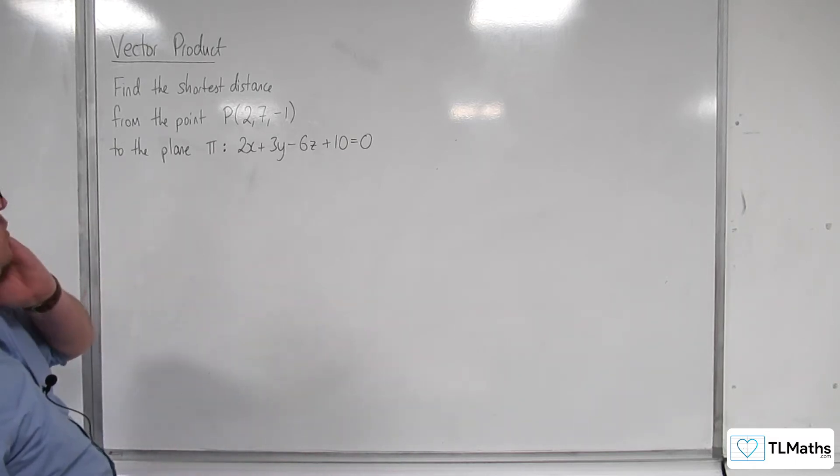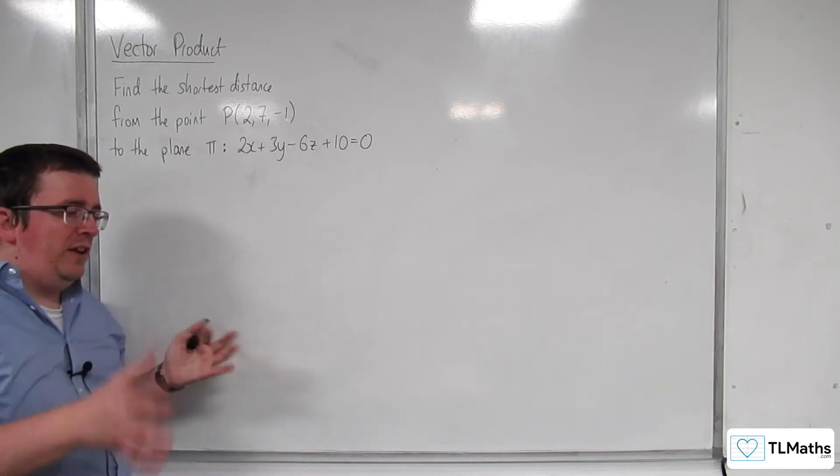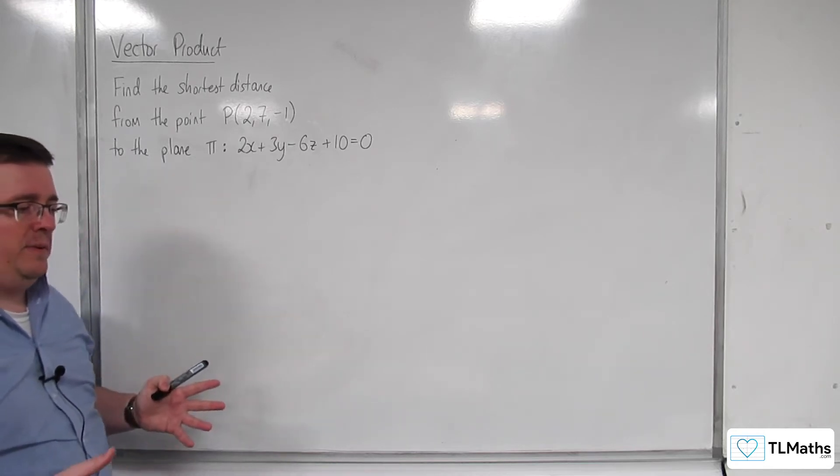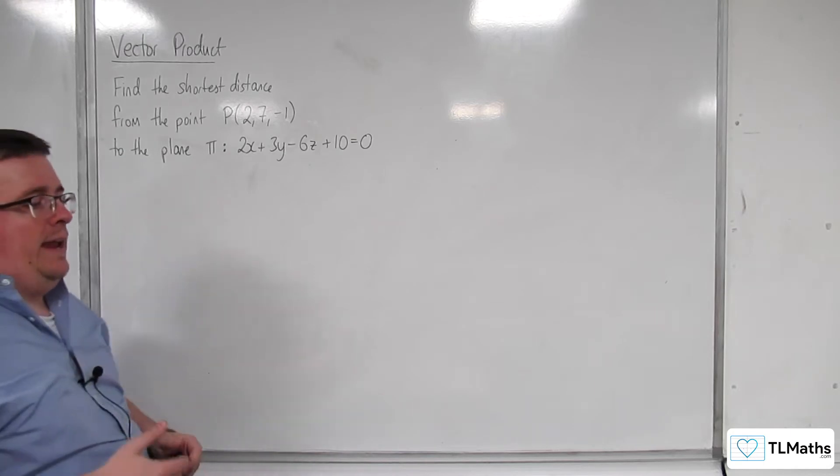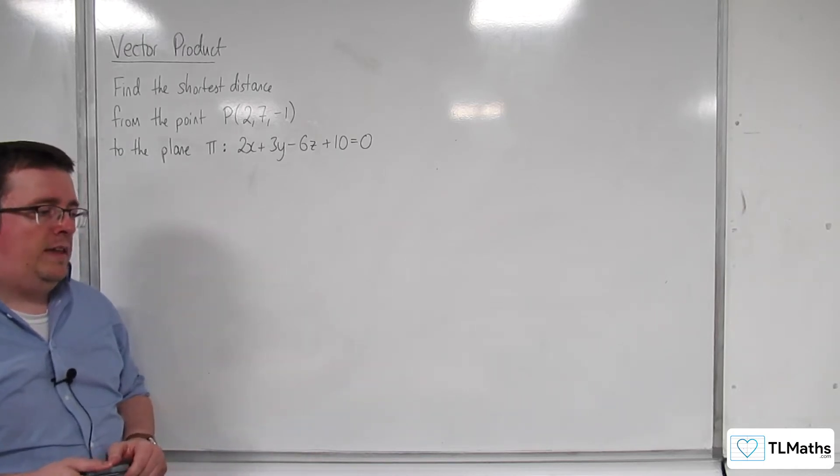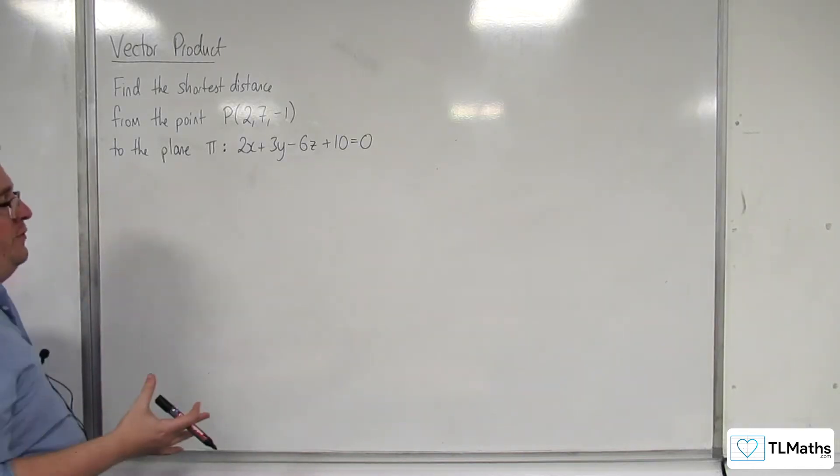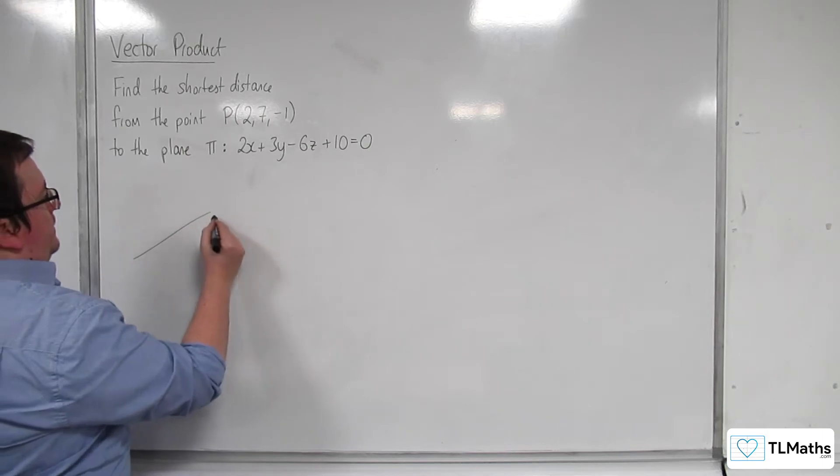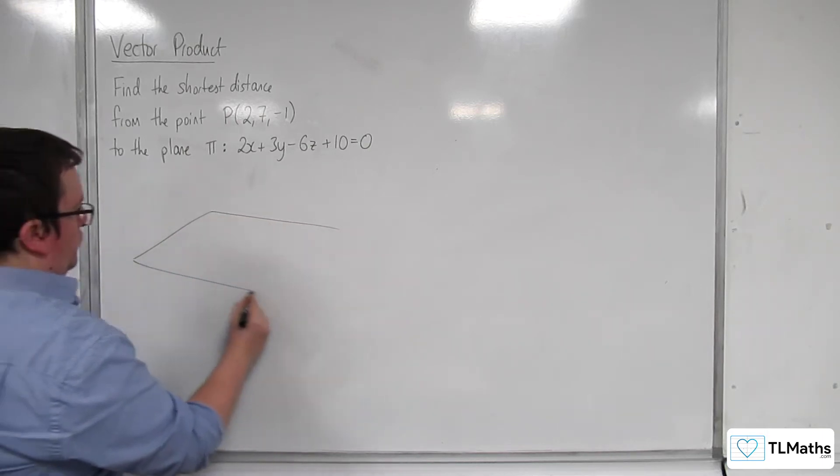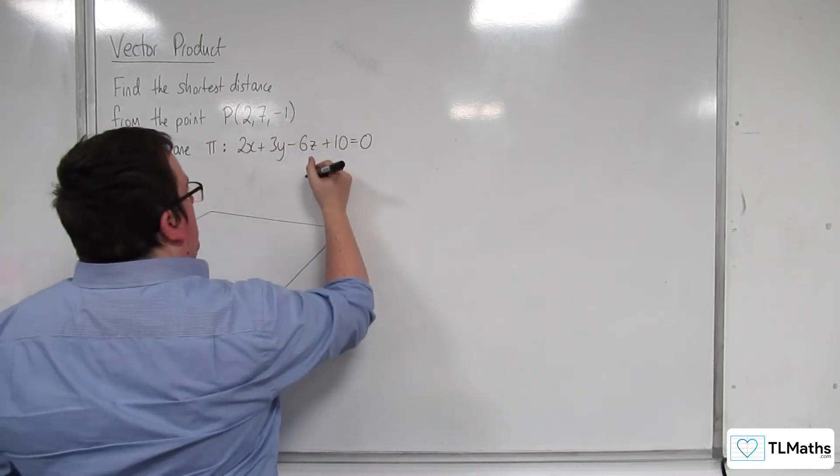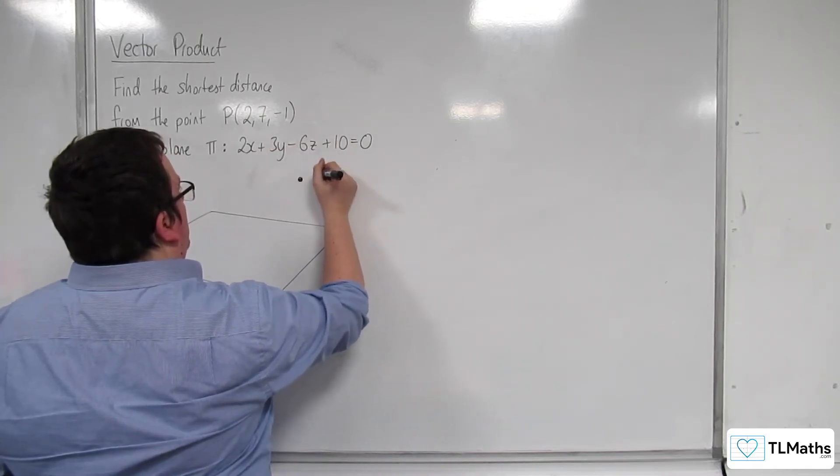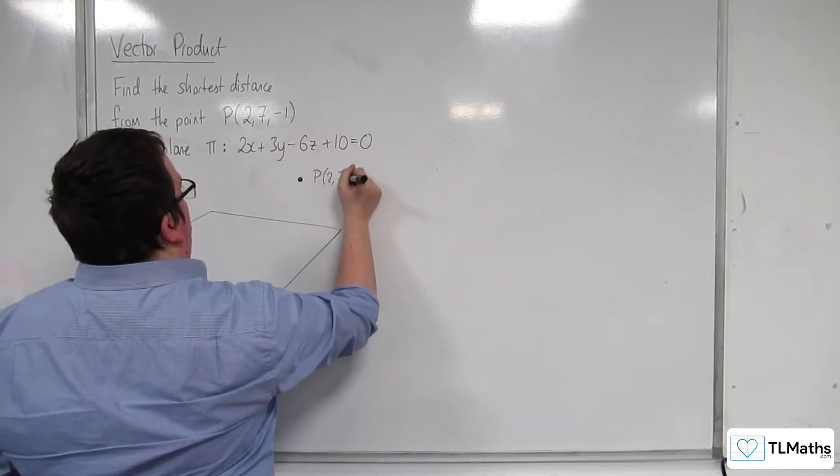So how are we going to do this? We've already seen a way of doing this previously, but this is to build up a formula. The formula should be in the formula booklet for this. So let's draw a diagram so we can visualize what's going on. Let's draw a plane, and here is the point P with coordinates (2, 7, -1).